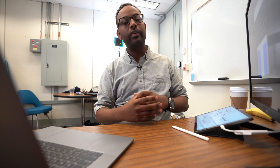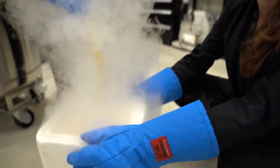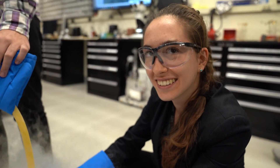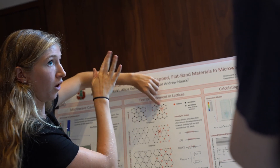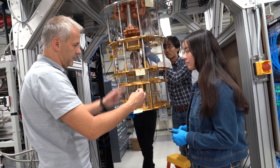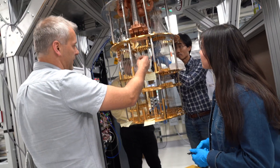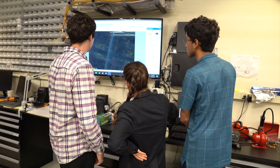Now that we're confident that our circuit is doing what we expect, let's run it on a quantum computer at IBM and see what happens. Quantum undergraduate research at IBM in Princeton — it's a program where you spend six weeks at Princeton doing research in an academic setting and then four weeks at IBM doing research in an industry setting.